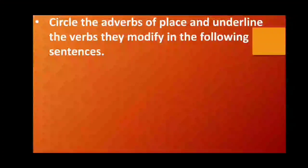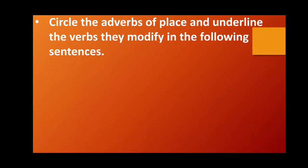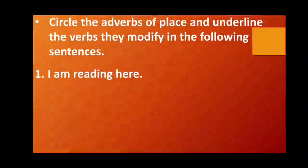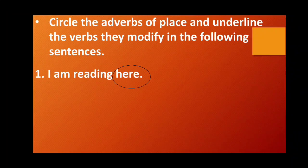Children, now we have to circle the adverbs of place and underline the verbs they modify in the following sentences. The first sentence is, I am reading here. The adverb of place is here, and reading is the verb.